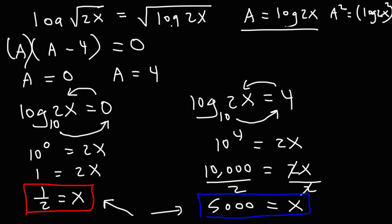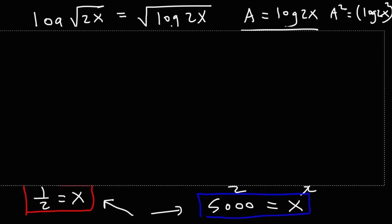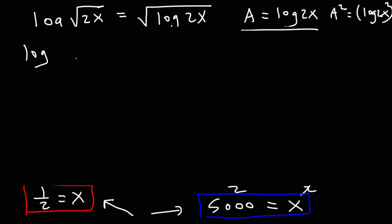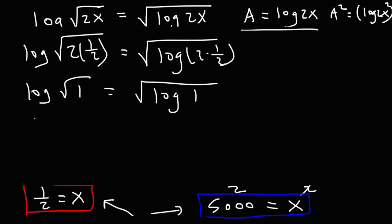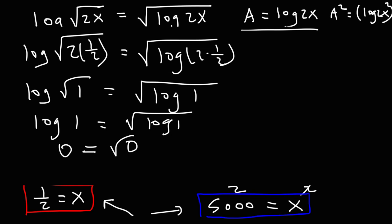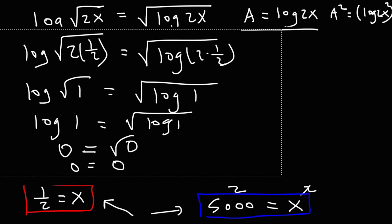You can check by plugging the answers in to make sure they're correct. Let's start with x equals 1/2: we have log of the square root of 2 times 1/2 equals the square root of log of 2 times 1/2. 2 times 1/2 is 1, so we have log of the square root of 1 equals the square root of log 1. The square root of 1 is 1, and log 1 is 0, so we have 0 equals the square root of 0, which is 0. The first answer works.